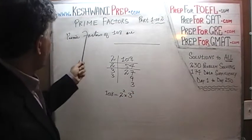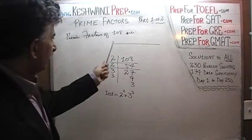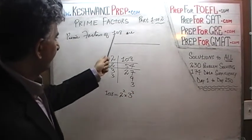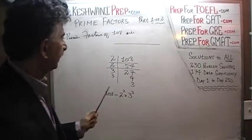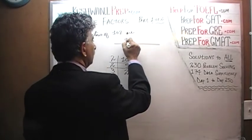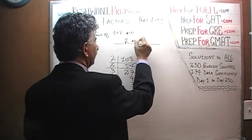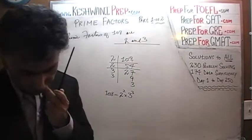So how many prime factors does 108 have? The prime factors of 108 are only 2 and 3. That's it — it has only two prime factors.